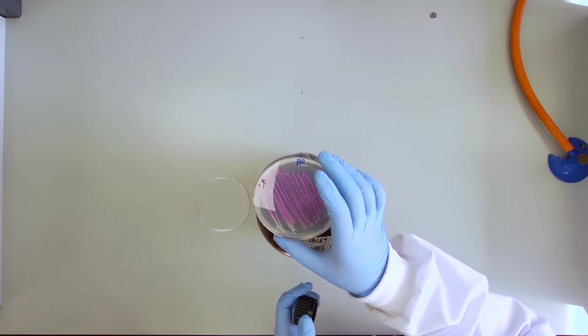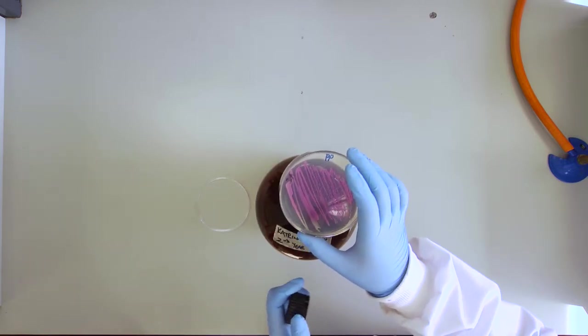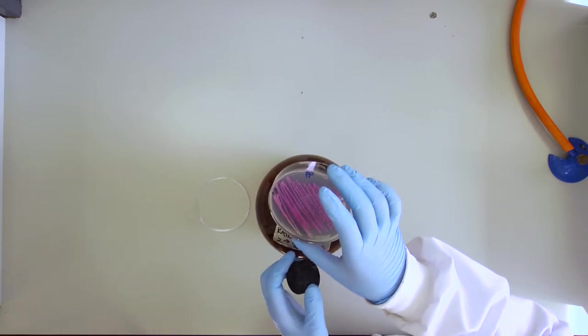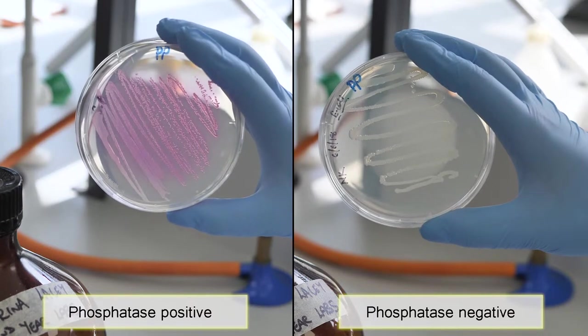phosphatase-positive colonies will turn bright pink colour. If the bacteria are negative for the phosphatase test then the colonies will remain colourless.